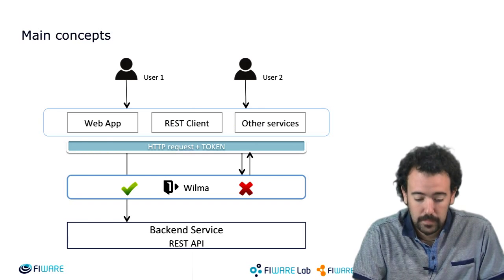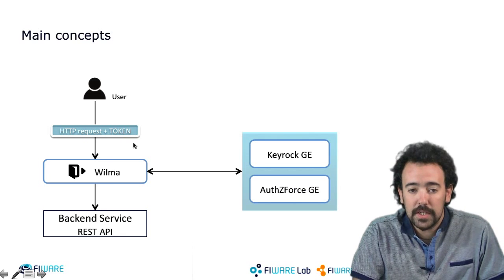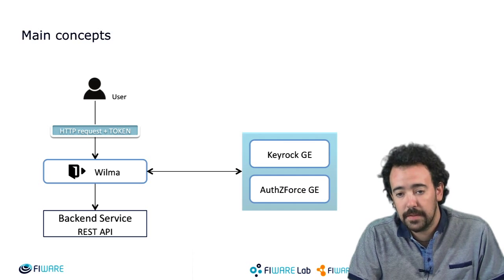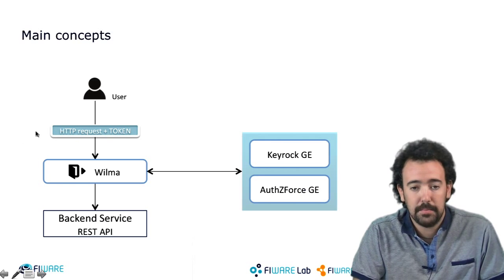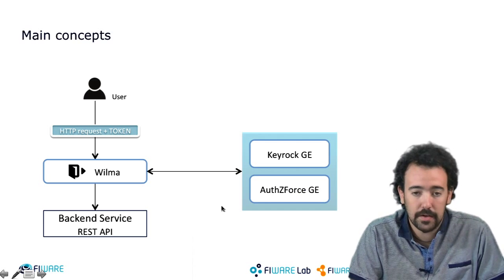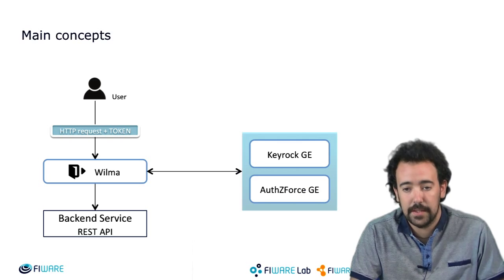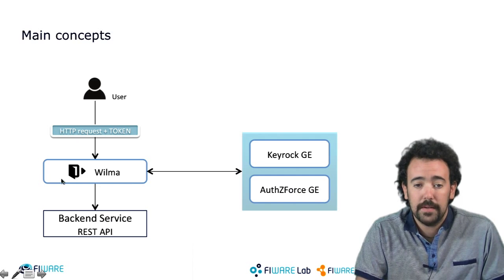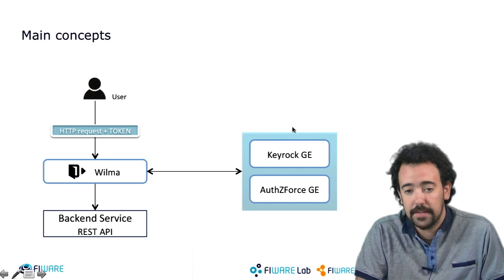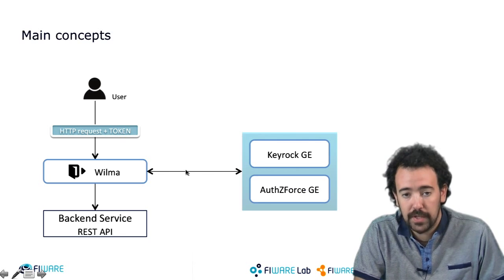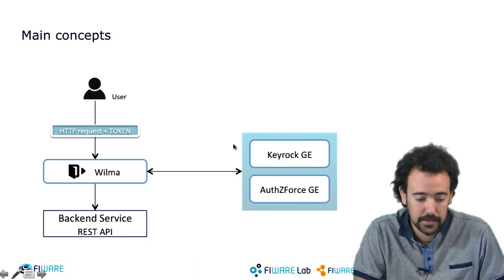How is this possible? Every request needs to include in the HTTP header an authorization token that will be intercepted by Wilma, and Wilma will check with the other generic enablers if the token is valid in order to access the specific resource that the user is trying to access. So in order to start using Wilma we need to register it inside these generic enablers, inside Keyrock, in order to enable this communication between Wilma and these generic enablers.